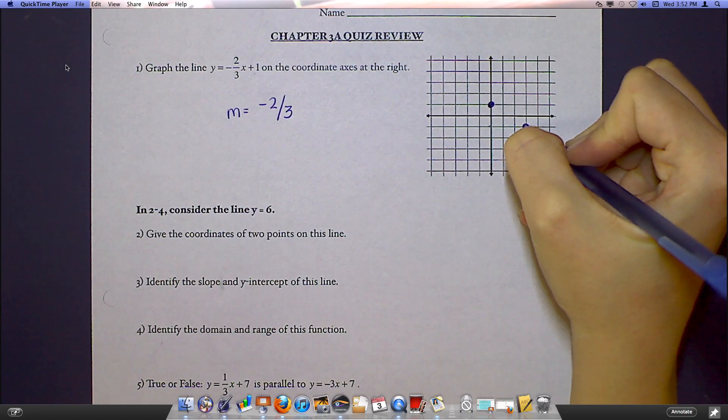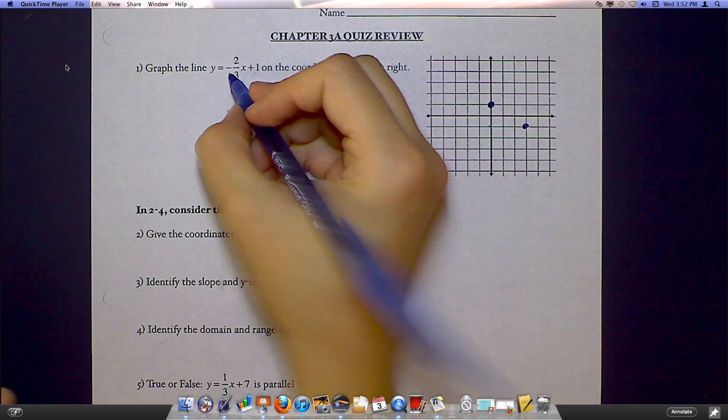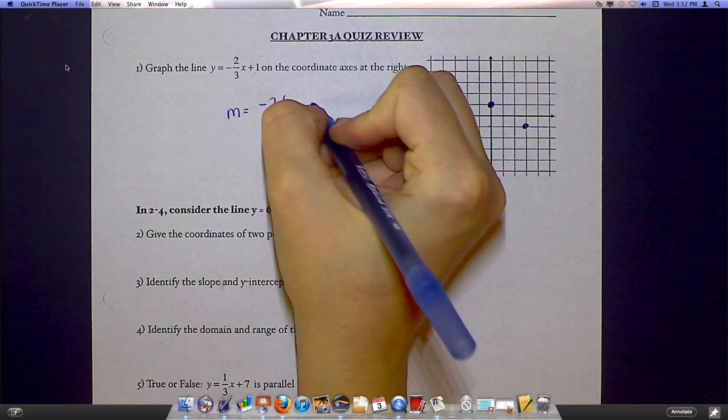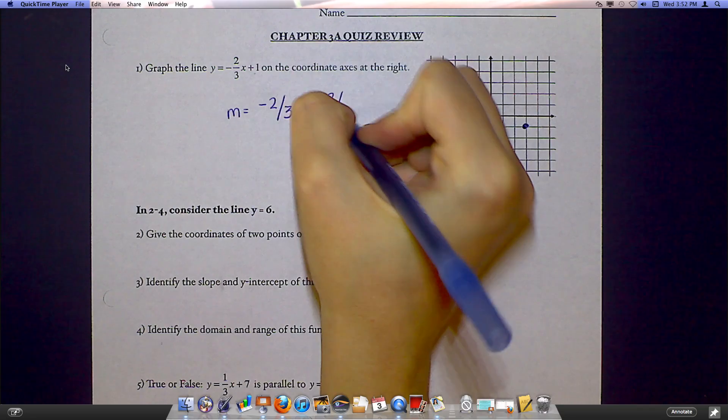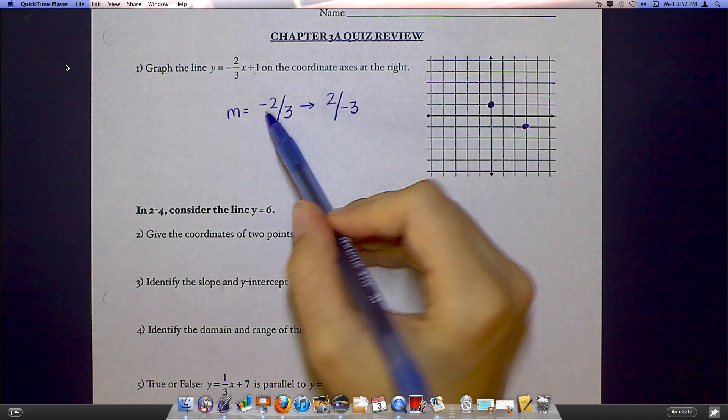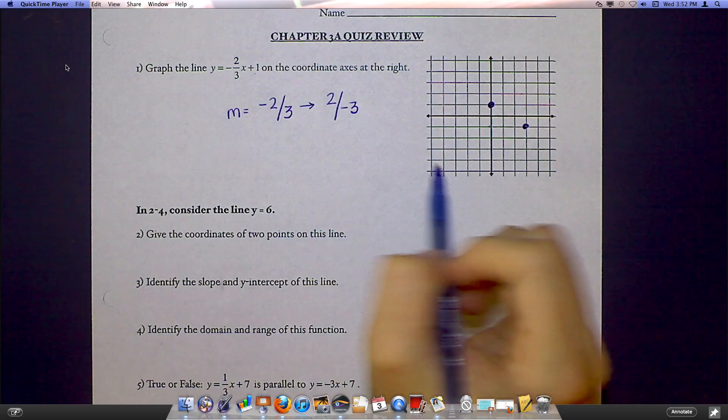Remember that with slope, the top number always tells you to go up and down, and then the bottom number tells you left and right. I could have taken that negative sign and put it on the bottom as well. I could have made this two over negative three. And that's okay as long as I don't put a negative on both of them at the same time. I can put the negative wherever I feel like.